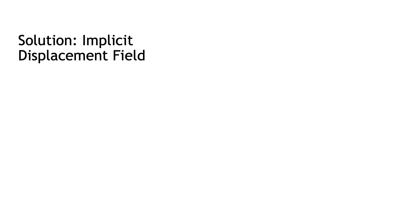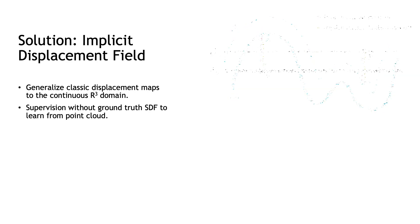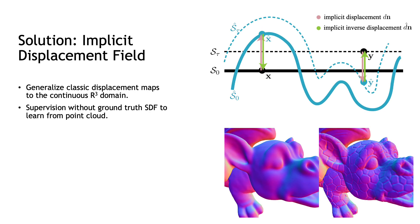Hence, our work proposes a theoretically grounded extension to generalize classic displacement maps to the continuous R3 domain. We pay extra attention in the formulation to avoid requiring ground-truth SDF values for supervision, such that we can directly learn from the point cloud by solving eikonal equation and boundary constraints.